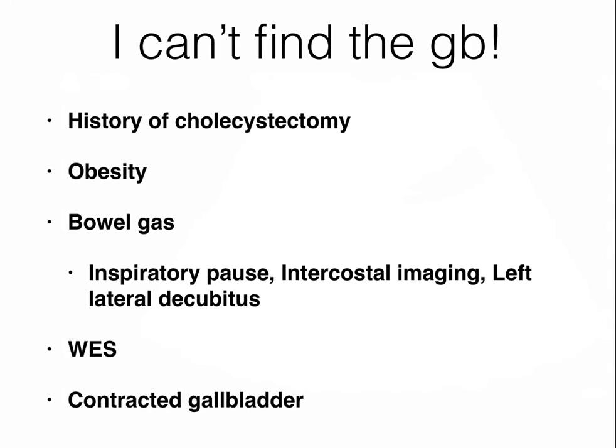There are some reasons for not finding the gallbladder. One — if they've had it removed, so history taking is very important. Second, in morbidly obese patients it may be difficult to image. Bowel gas is a constant nemesis, and if you can't image it after employing the inspiratory pause and using intercostal windows, try having the patient rotate to their left in a left-lateral decubitus position — this shifts the gallbladder more superficially and displaces bowel to the left. Also, someone who has recently eaten will have a contracted gallbladder that may be difficult to image.